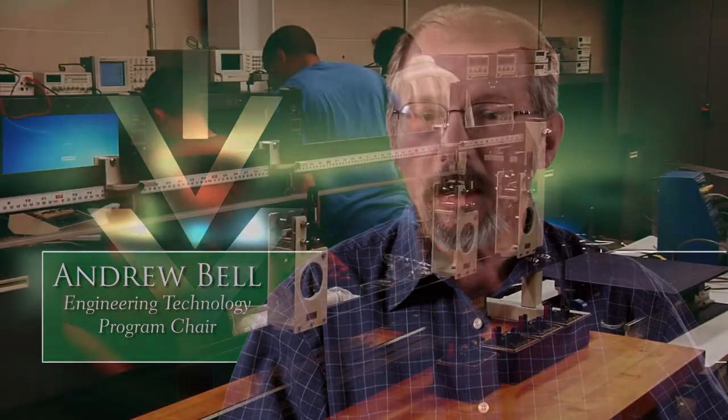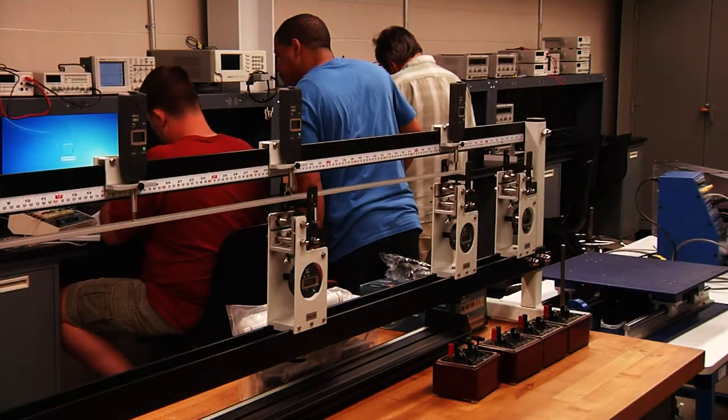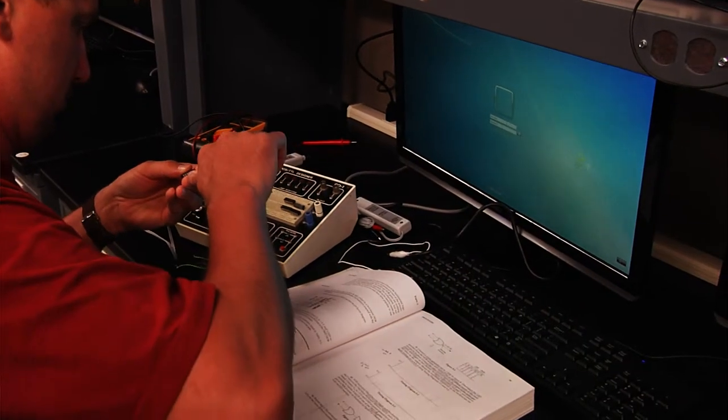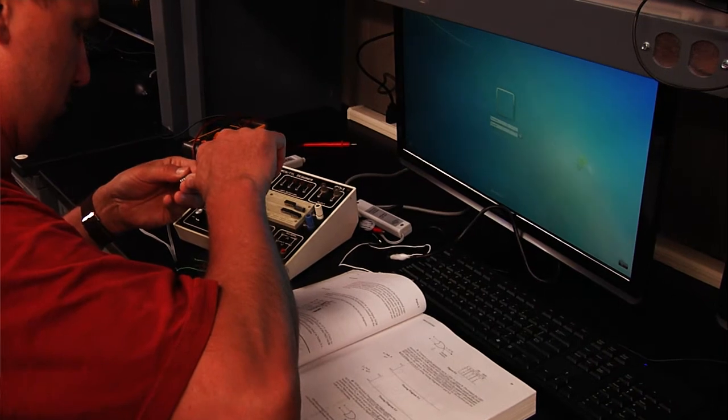The engineering technology program is a two-year engineering program that can lead to either an associate's degree where you then go on to a four-year college to get your bachelor's, or you can use that degree and get a job as a technician.